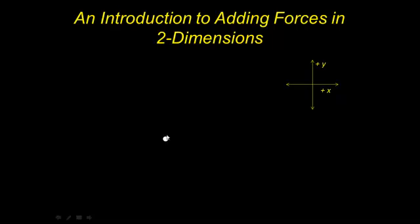This point right here is going to represent the object on which the forces act. Instead of drawing an object over and over, we'd like to simplify it and just represent whatever the object on which the forces act with a single point. Now let's suppose we have a force, we'll call it F1, of 50 Newtons acting in the positive y direction.